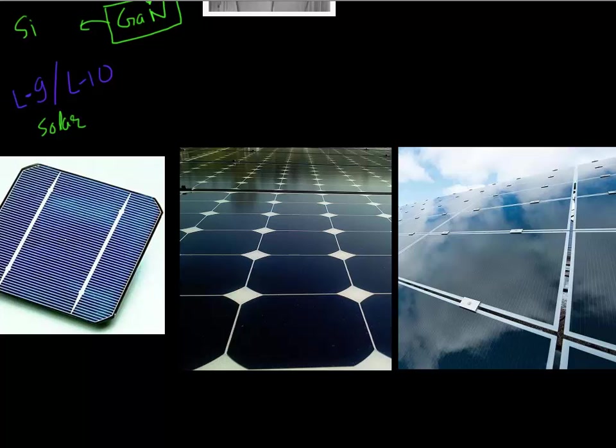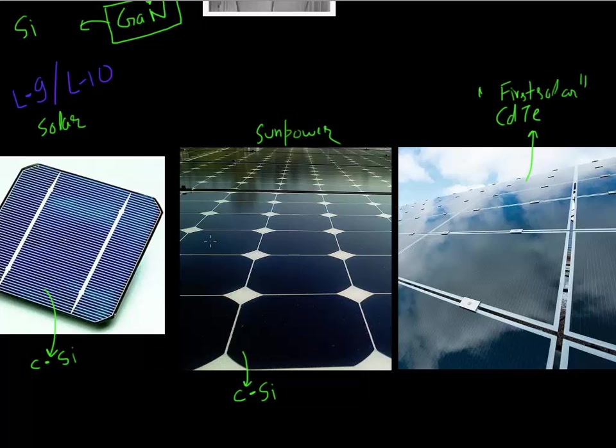In most of the cases, you can actually pinpoint one or two companies which might have made those cells just by looking at them. Looking at this, this particular cell, by looking at it, I can tell that it's a crystalline silicon cell. This one is also a crystalline silicon cell, but it's a backside emitter and backside collector, probably made by SunPower. And by looking at this particular panel, I can tell that it's a CdTe based technology, thin film technology, probably made by a company called First Solar.